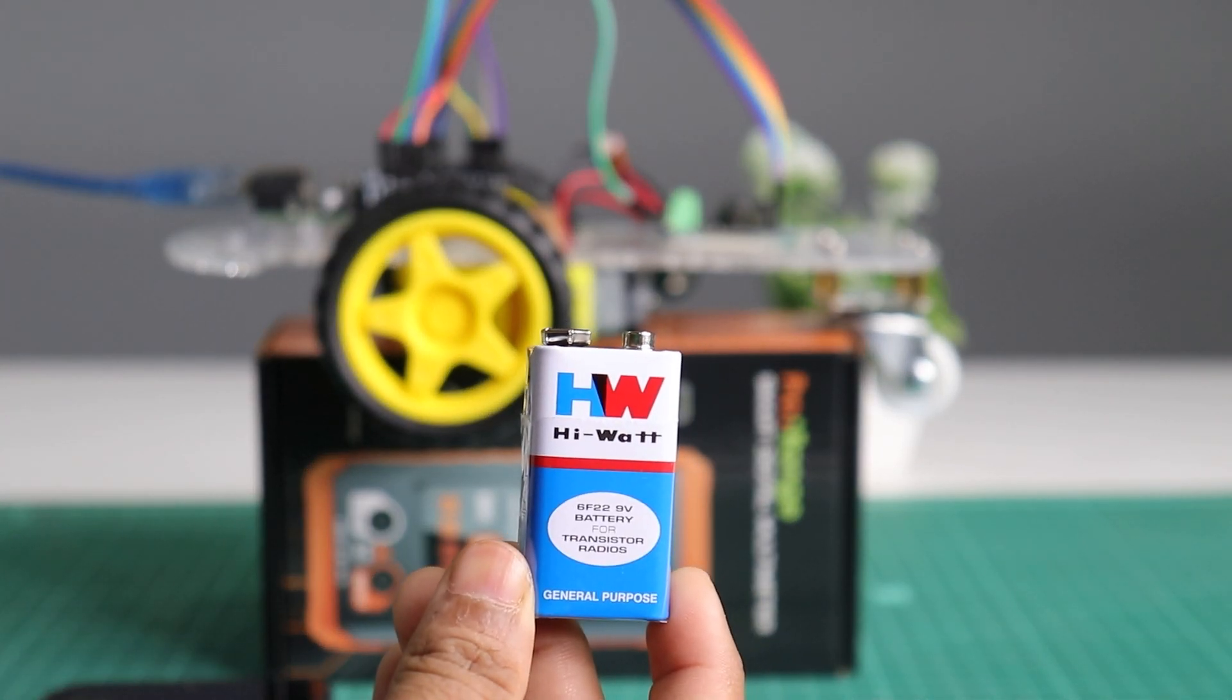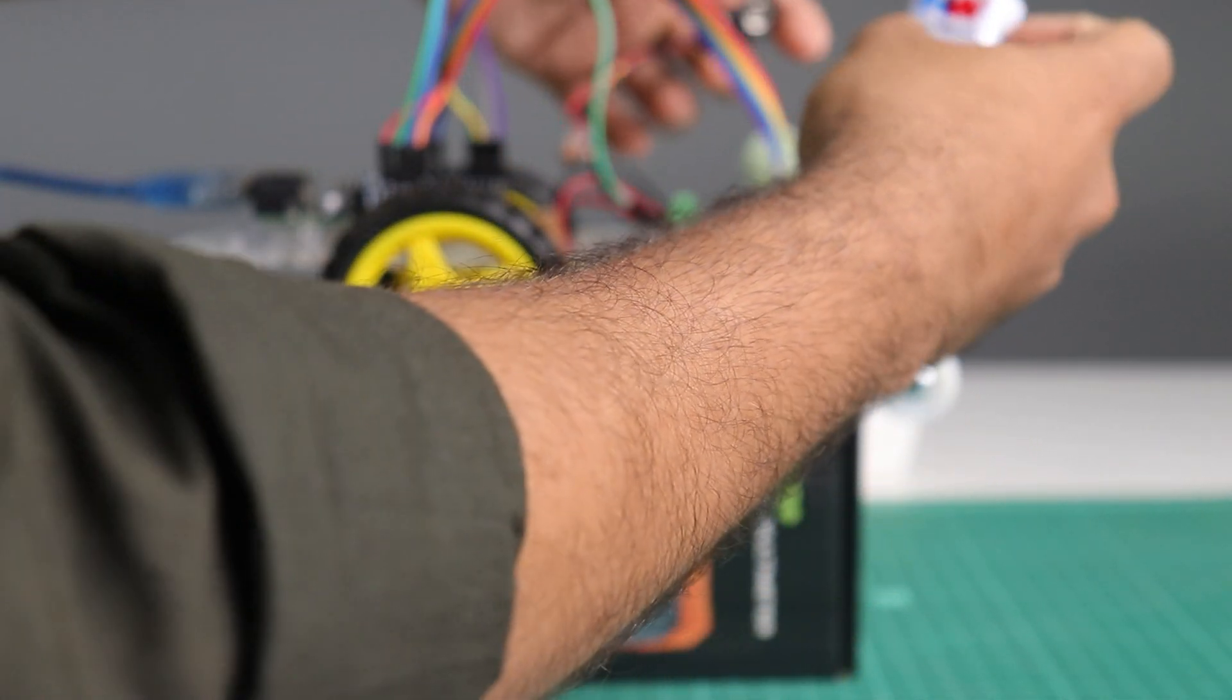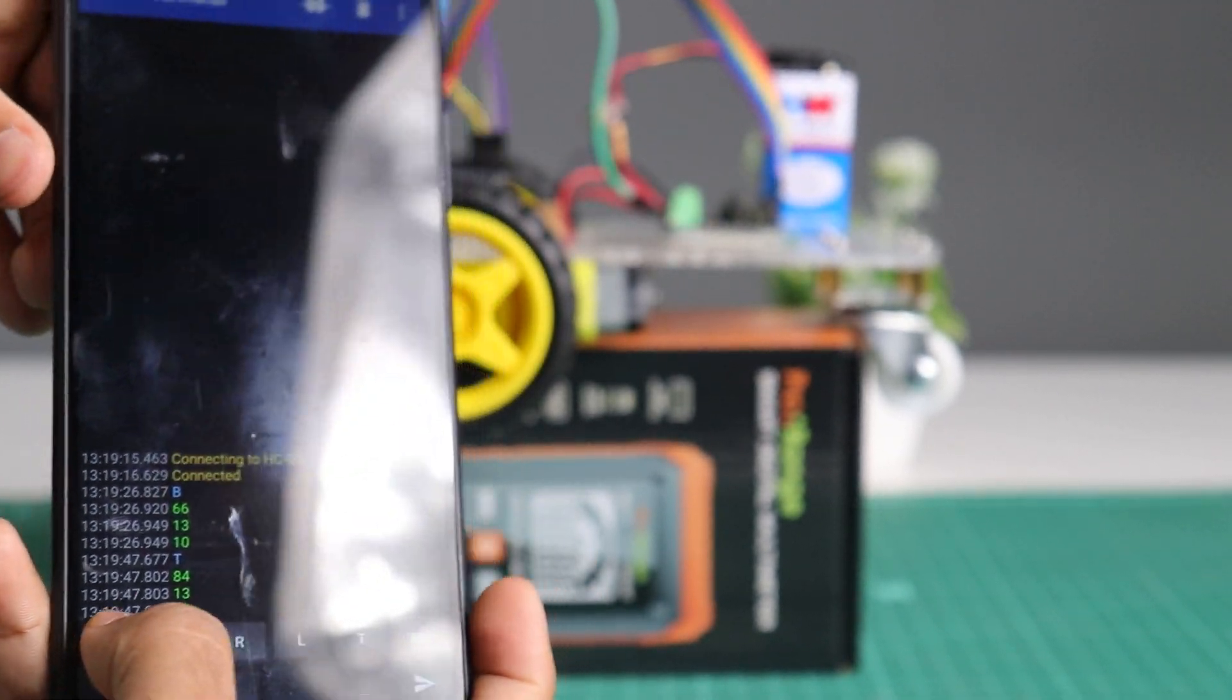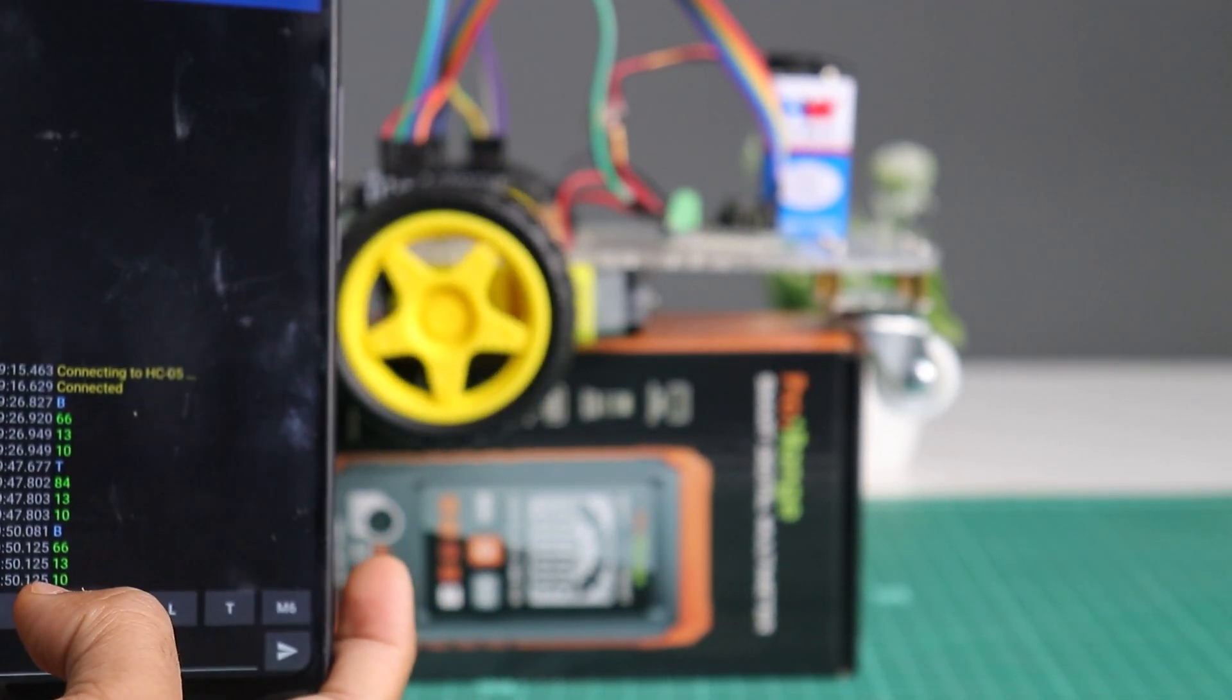Okay, now attach the battery to the circuit and turn on the switch. And as you can see, motors can be controlled from smartphone.